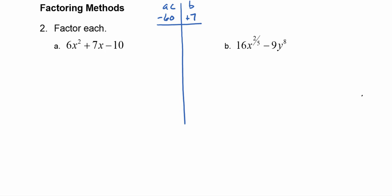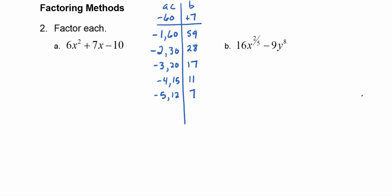We go through the factors of negative 60 to see what they add up to be. Negative 1 times 60 is 59 — we want positive 7, so that didn't work. Negative 2 times 30 adds up to 28. Negative 3 times 20 adds up to 17. Negative 4 times positive 15 adds up to 11. Negative 5 times positive 12 does add up to 7. That's what we were looking for — those are the two factors we want to use.